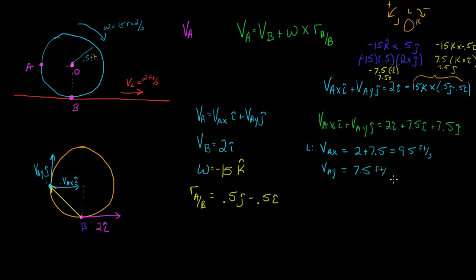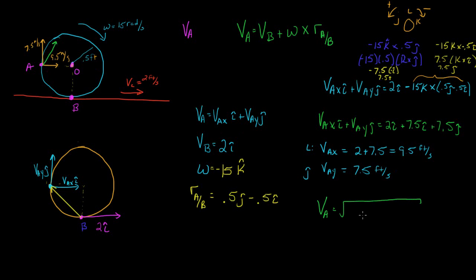Our velocity in the X direction is 9.5 feet per second, and in the J direction it is 7.5 feet per second. Our magnitude is going to be the square root of 9.5 squared plus 7.5 squared, and if we perform this calculation we get 12.1 feet per second.